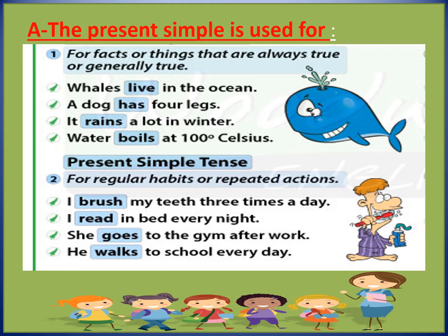For example: I brush my teeth three times a day — the action is 'brush' and I repeat it three times a day. I read in bed every night — every day at night I repeat the same action. She goes to the gym after work, meaning every time after work she goes to the gym — it's a repeated action. He walks to school every day, meaning every day he repeats the same action.